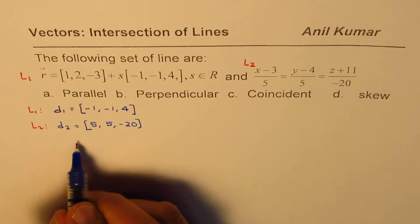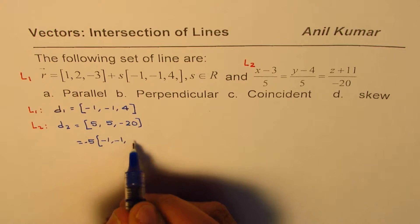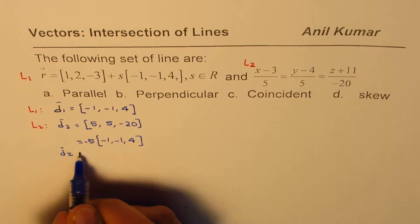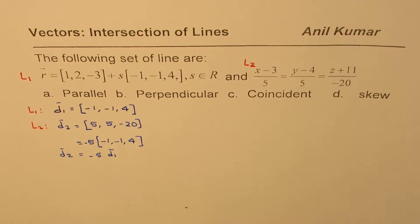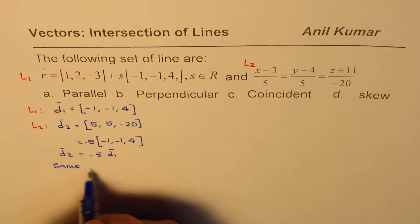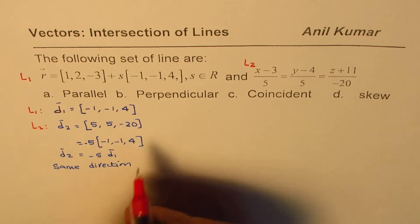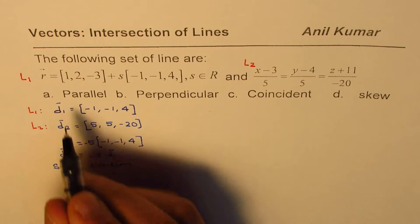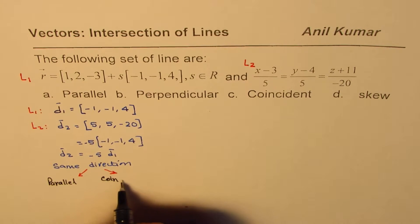What do you observe? If I take -5 common, we get (-1, -1, 4). That means d2, the direction vector of the second line, is a scalar multiple of d1. So they are at least parallel, they have the same direction. This means they could be either parallel or coincident.